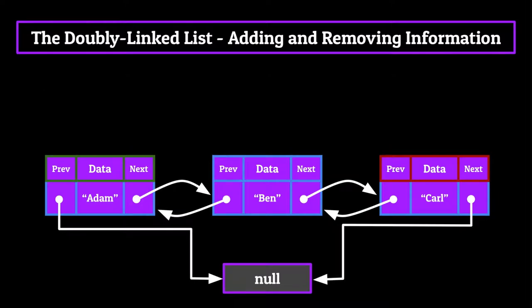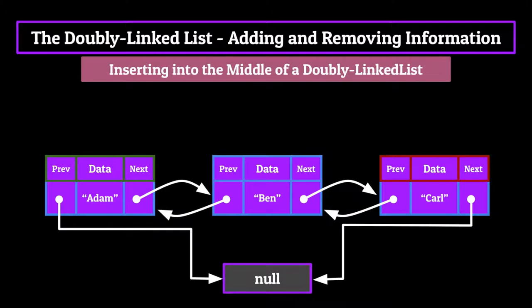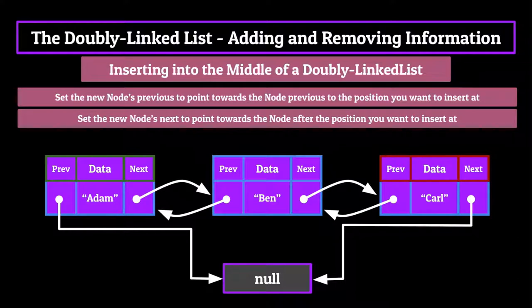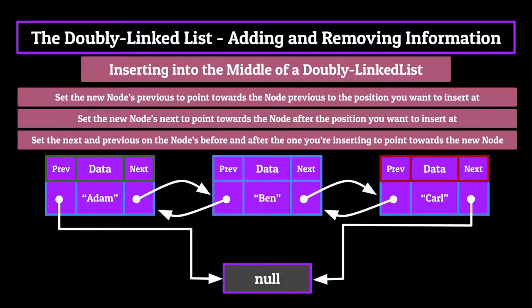Up next is inserting and deleting from the middle of a doubly linked list, and this is where things get tricky. For inserting, this is going to be a three-step process. Step 1: set the new node's previous to point towards the node previous to the position you want to insert at. Step 2: set the new node's next to point towards the node after the position you want to insert at. Step 3: set the next on the node before the one you're inserting, and the previous on the node after the one you're inserting, to both point towards the new node.